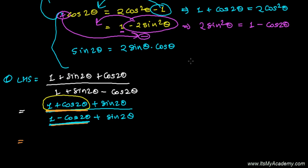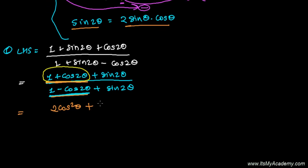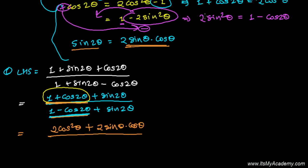In place of 1 + cos 2θ, I'm writing 2 cos²θ. For sin 2θ, we only need the formula 2 sinθ cosθ — because we'll get cotangent or tan(θ/2) simply by the ratio of sine and cosine. So sin 2θ = 2 sinθ cosθ. Repeating the same in the denominator: 2 sin²θ in place of 1 − cos 2θ, plus sin 2θ again replaced by 2 sinθ cosθ.